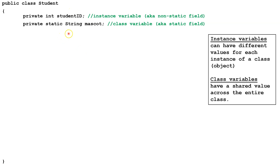Down here, we have a static field, also known as a class variable. We know it's a static field because it says static here. This value, mascot, since it's a class variable, will have the same value across all instances of Student. This variable belongs to the class. Now, we can change the value, but it changes it everywhere.